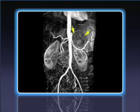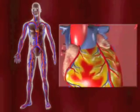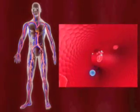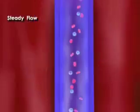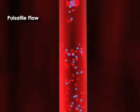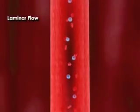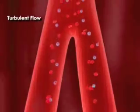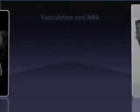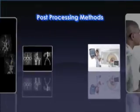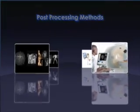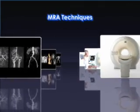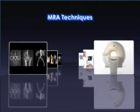Blood, like other tissues in the body, can be visualized with MRI. It is important to understand blood hemodynamics since it determines the signal intensity. The different types of blood flow include steady flow, pulsatile flow, laminar flow, and turbulent flow. MRI offers a number of MRA scan techniques for vascular evaluation of the head, neck, body, and peripheral circulation.